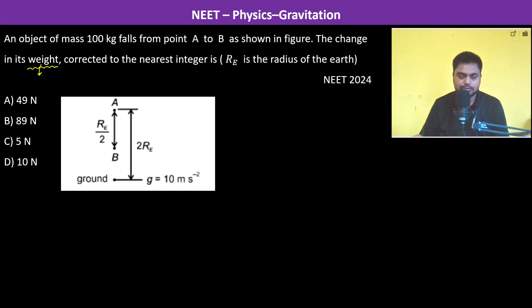At A, what is the force? The force experienced at A is G times mass of earth into this mass divided by—now it's 2Re from the ground. We have to see it like this: from the center of the earth it's Re, and this is 2Re.